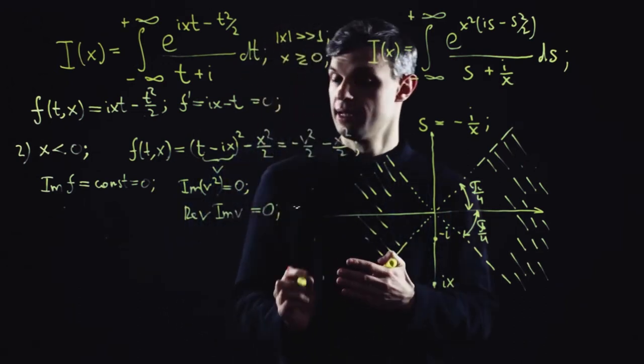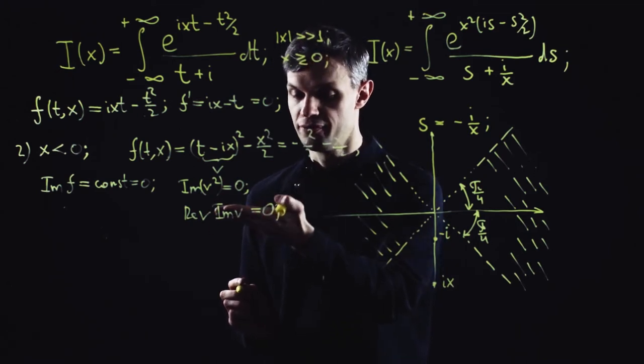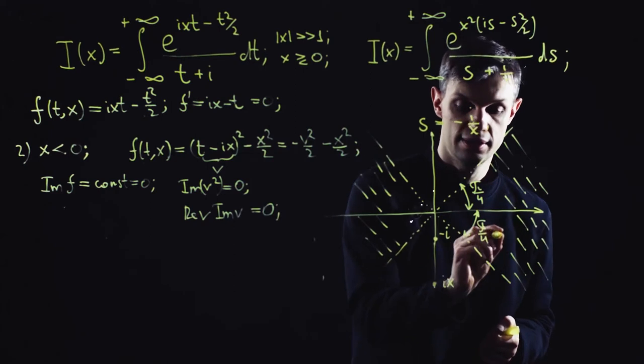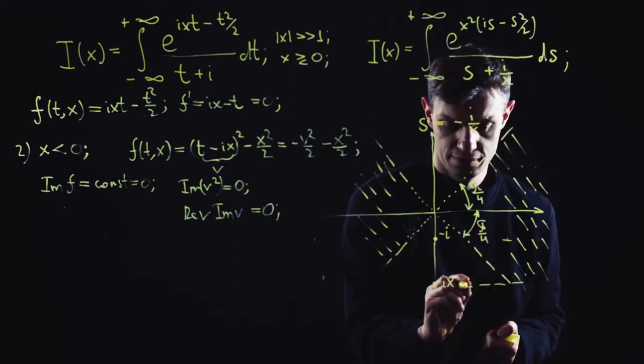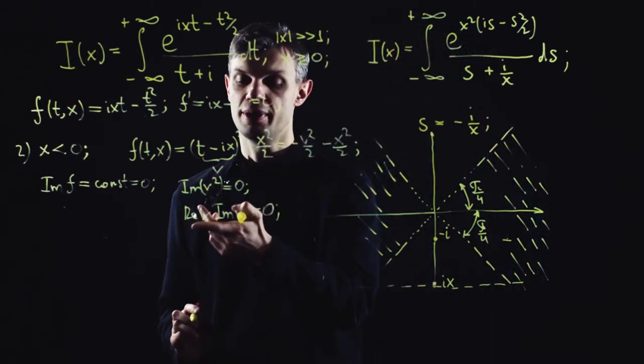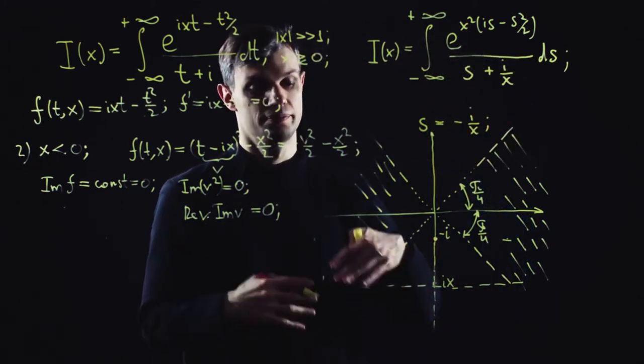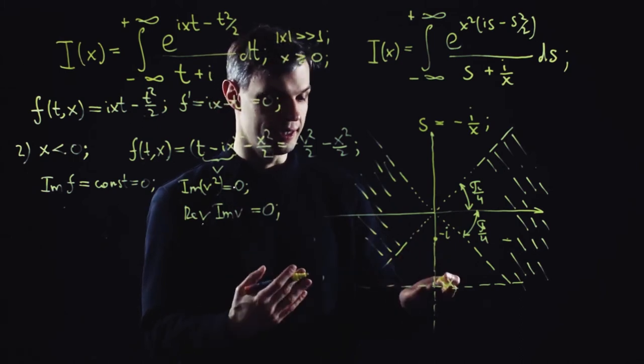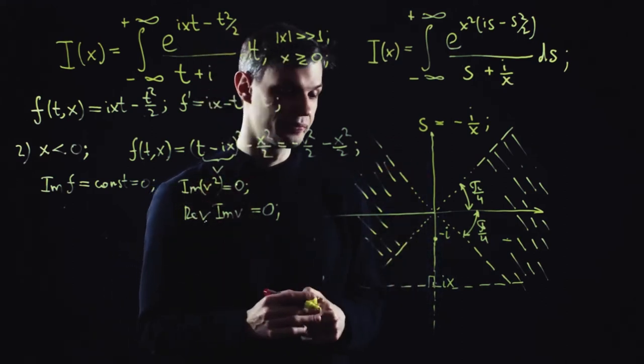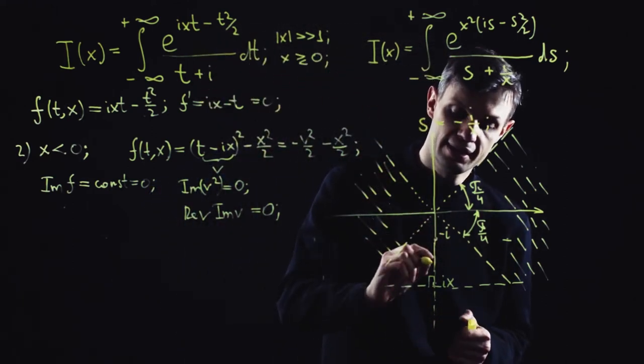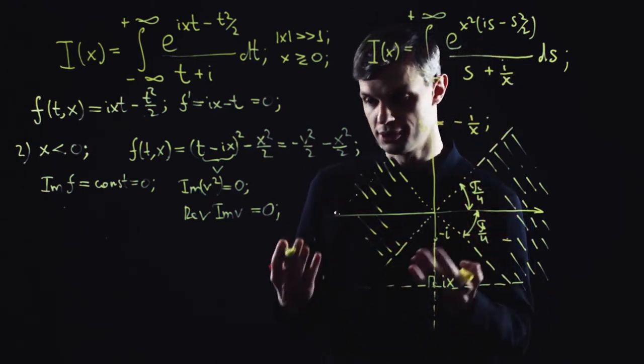We get what we expected. The imaginary part of v equals 0 is the perpendicular line. The horizontal one is the line of the steepest descent. The perpendicular line is the line of the steepest ascent from the saddle. Notice that this steepest ascent line actually connects the pole and the saddle, which is going to be important in a second.